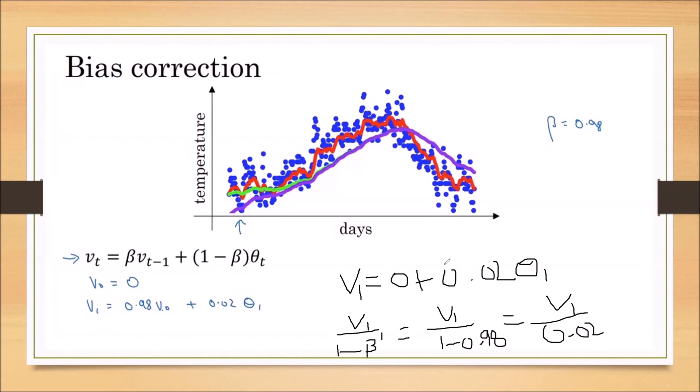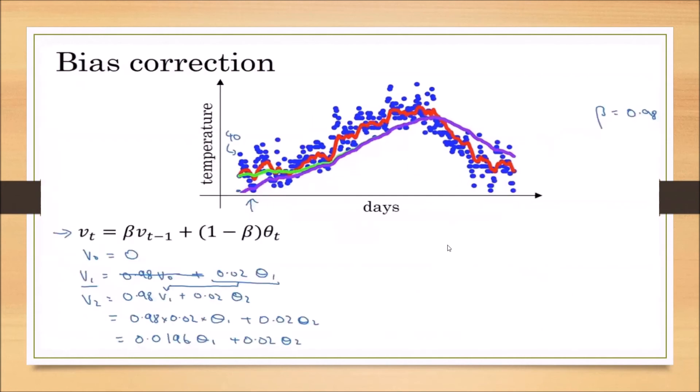If we divide the V₁ by 0.02, then this 0.02 will be removed, then V₁ equal to θ₁. That is what we are expecting. The first day moving average temperature should be θ₁ only, right? So this is how we implement Vₜ by 1 minus β power t.